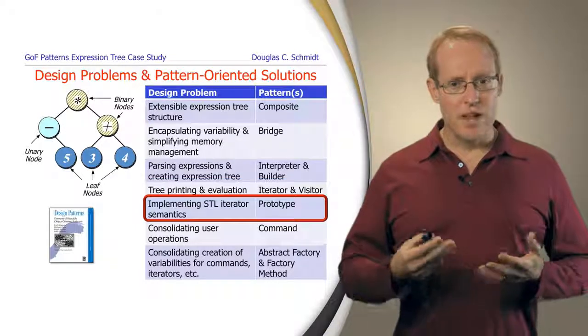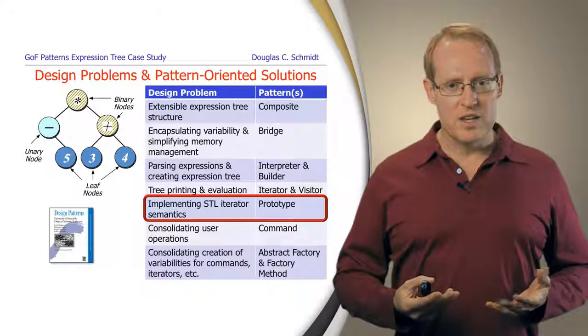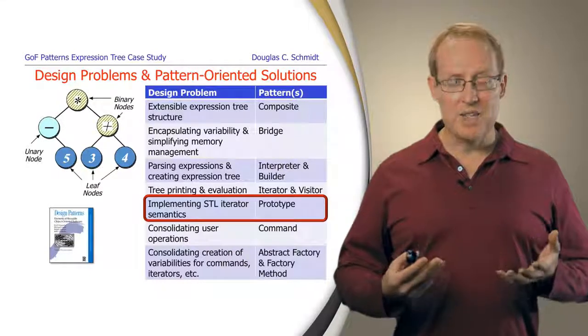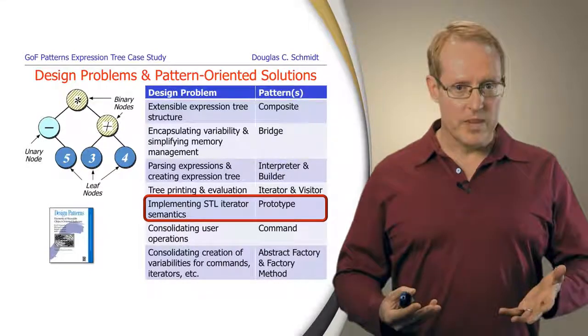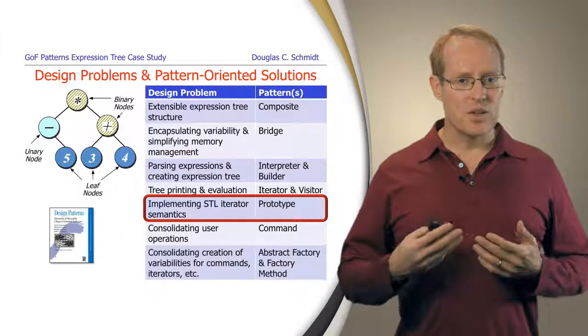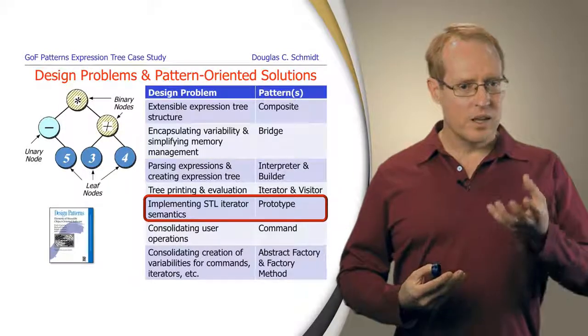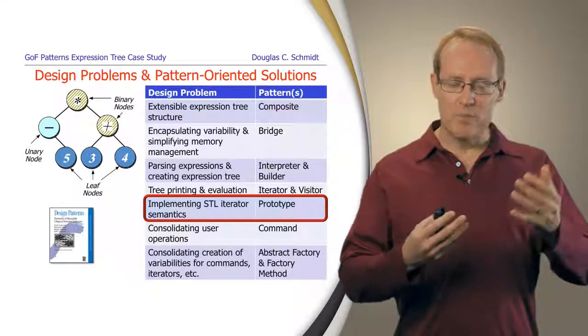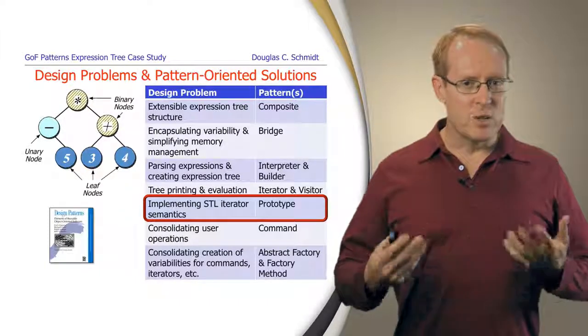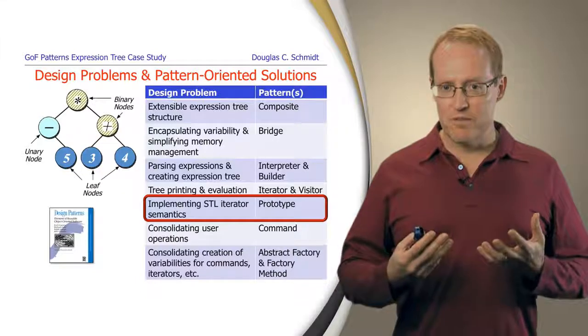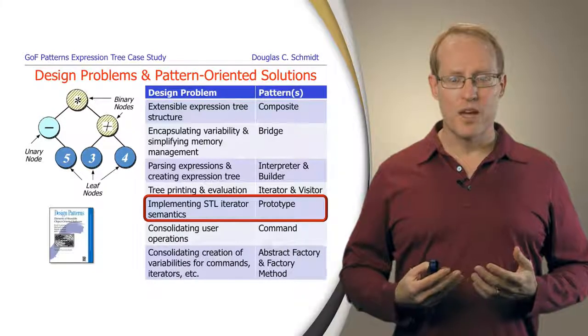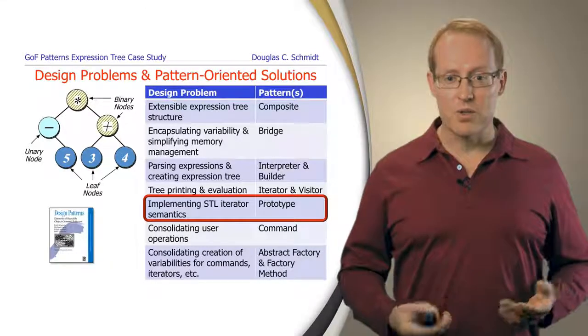As we do this, as we apply these patterns for iteration and visiting, we're also going to be trying to follow as closely as we can to the C++ STL iterator form. And in order to do this, we have to represent certain things in certain ways. And it turns out that one of the challenges is how to talk between the bridge interface, which encapsulates variability, and the composite portion of our tree. And to do this effectively is going to require a way to anonymously create various objects. And we're going to use the prototype pattern from the Gang of Four book in order to be able to create these objects in a way that doesn't expose their type.